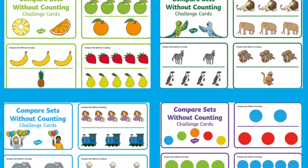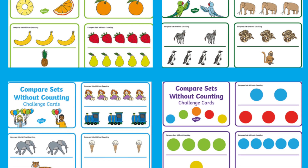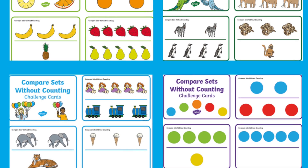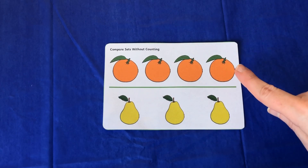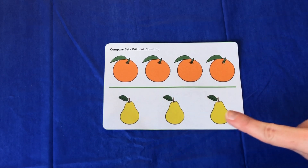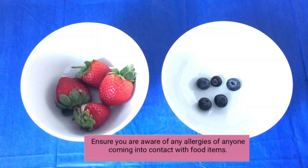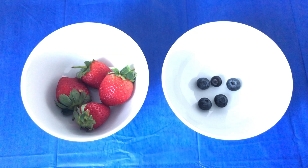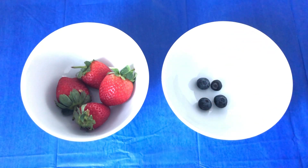These colourful comparing sets cards are the perfect way to discuss comparing sets of objects with children. Ask questions such as are there more oranges or more pears? Why not use real fruit and snacks to carry on the conversation? Ask children who has more? What happens if I eat one? Does that change your answer?